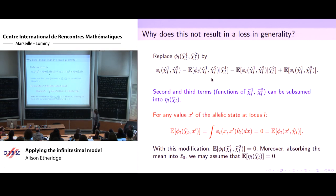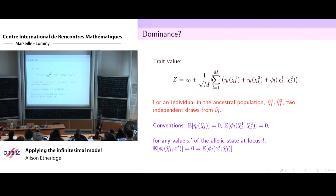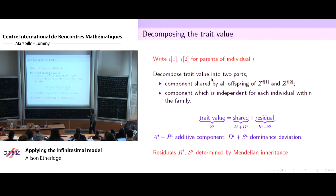Nick said epistasis was easy. Epistasis is easy because we scale things differently. The dominance effect is on the same order as these additive effects — dominance matters here.